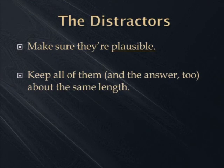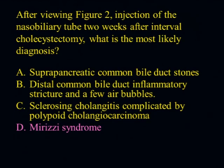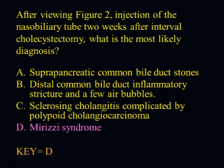You've got your plausible distractors. All the choices should be roughly the same length — in the same ballpark. Here's an example where the choices were: suprapancreatic common duct, common bile duct stones, distal common bile duct inflammatory stricture — and a few air bubbles — sclerosing cholangitis complicated by polypoid cholangiocarcinoma. Then D: Mirizzi syndrome. These three mega combo answers and one answer one-fifth the length — and that's the right answer. Whether right or wrong, it's an outlier. You should be like an umpire — they should not see you. If they see you, it's a problem. Avoid that.